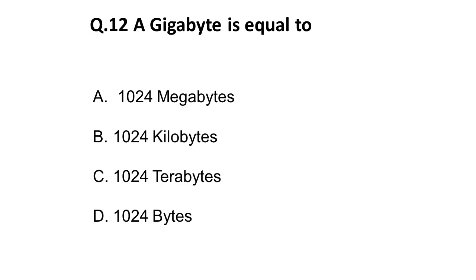The twelfth question: a gigabyte is equal to what? One GB (gigabyte) is equal to 1024 megabytes. 1024 kilobytes is equal to one megabyte, and 1024 bytes is equal to one kilobyte. Remember this conversion and these memory units because from ICT — Information and Communication Technology — there are questions on memory size and memory relations.